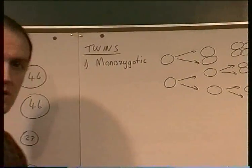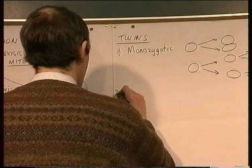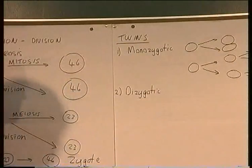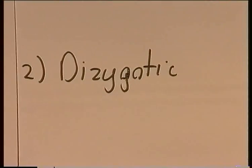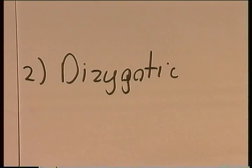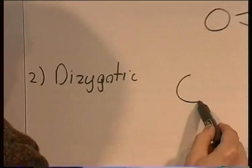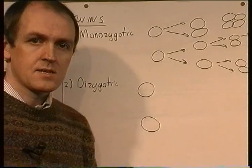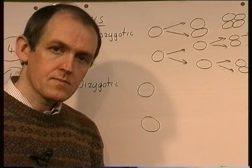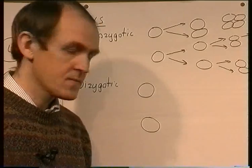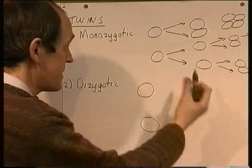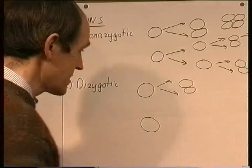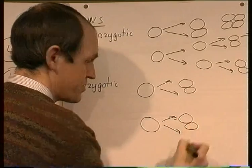The second sort of twins are called dizygotic twins. In dizygotic twins, there are two zygotes, as the term indicates. The two twins originated from two zygotes because two eggs were fertilized by two separate sperms. One sperm fertilized one egg, another sperm fertilized another egg, and then they go on dividing by the process of mitosis to produce two separate organisms.